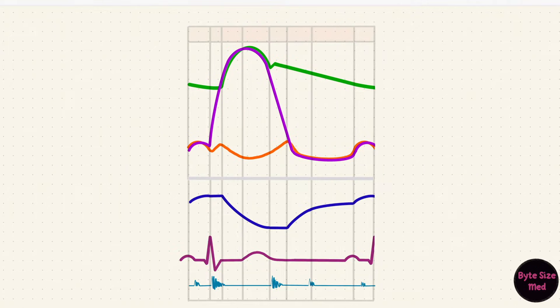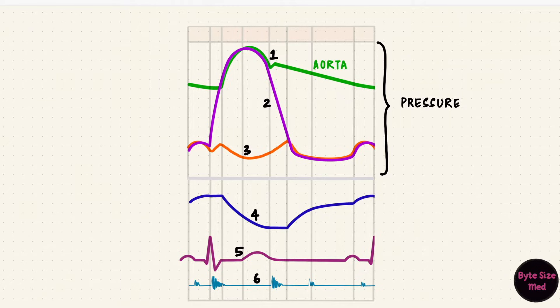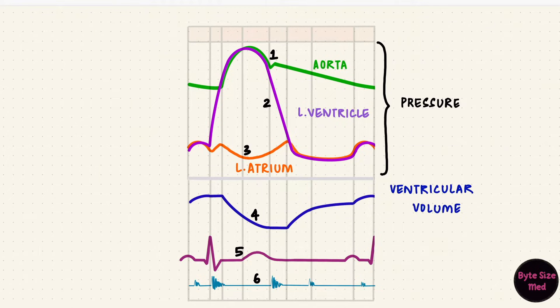We'll start off with the diagram itself. We've got six parts: the three pressure changes — the aorta, the left ventricle, and the left atrium. We usually use the left side of the heart on this diagram. Then we have the ventricular volume change, the electrocardiogram, and the heart sounds.